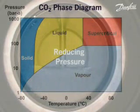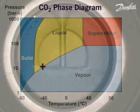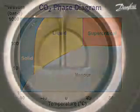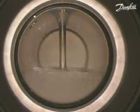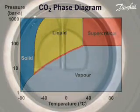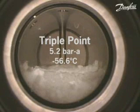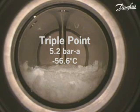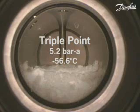The triple point is reached with further reduction in pressure and temperature. The system has now moved further down the vapour-liquid equilibrium line. Solid CO2 begins to form once a pressure of 5.2 bar absolute and a temperature of minus 56.6 degrees C has been reached. The triple point is the only pressure and temperature combination at which solid, liquid and vapour CO2 can exist simultaneously in equilibrium. As the pressure continues to fall below the triple point, only solid and vapour are present in the cell.